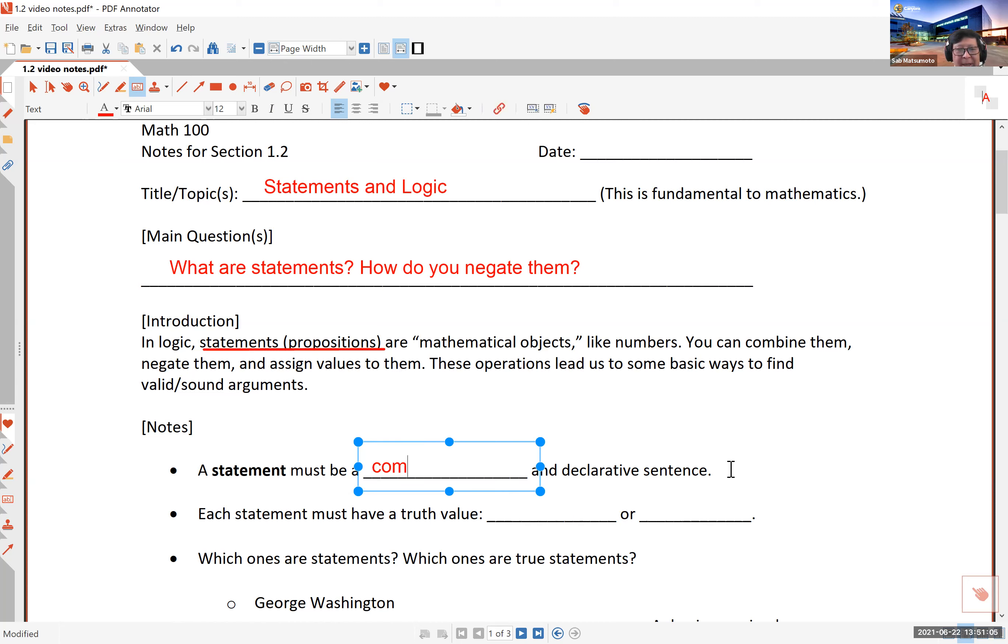A statement must be a complete and declarative sentence. You know what a declarative sentence is. We have interrogative sentences that are questions. We have imperative sentences that are commands. But a statement or a proposition, mathematically speaking, must be a declarative sentence. Each statement must have a truth value, whether it's true or, of course, false. Every statement has to have a truth value.